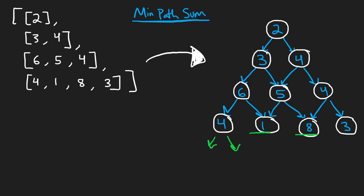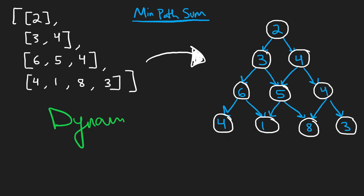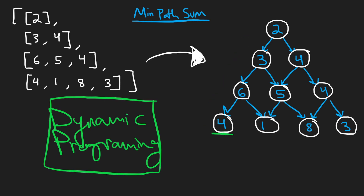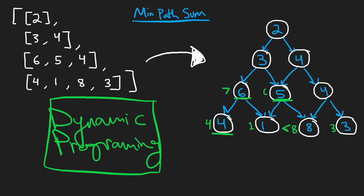But is there an easier way? We know the base case for all of these is they have children as 0. So let's actually do the dynamic programming solution — let's start at the bottom and work our way up. For 4, the minimum path sum is 4. For 1, it's 1. For 8, it's 8. For 3, it's 3. Now let's work our way up. At 6, all I have to do is take the minimum of my two children: compare 4 and 1. 4 is greater than 1, so we want the smaller element — 6 plus 1 is 7. Repeat that for 5: I have two children, 1 and 8. 8 is greater than 1, so I do 5 plus 1, which is 6. And last, for 4 in that row: 8 is greater than 3, so we do 4 plus 3, which is 7.